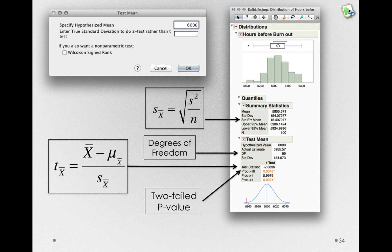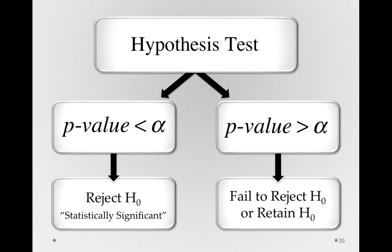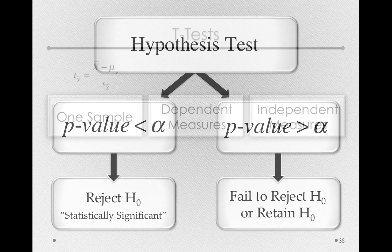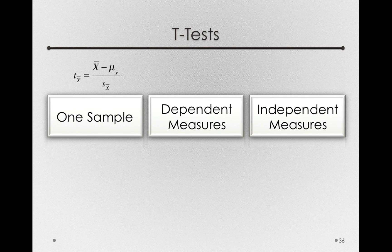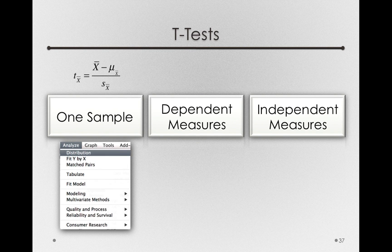But again, notice, even though we have a new test statistic, we can use our same decision. If our p-value is less than our standard of evidence, that is, if our p-value is more extreme than our standard of evidence, we're able to reject the null hypothesis. So now we can add to our t-test table here a one-sample t-test, which we find under Analyze Distribution.